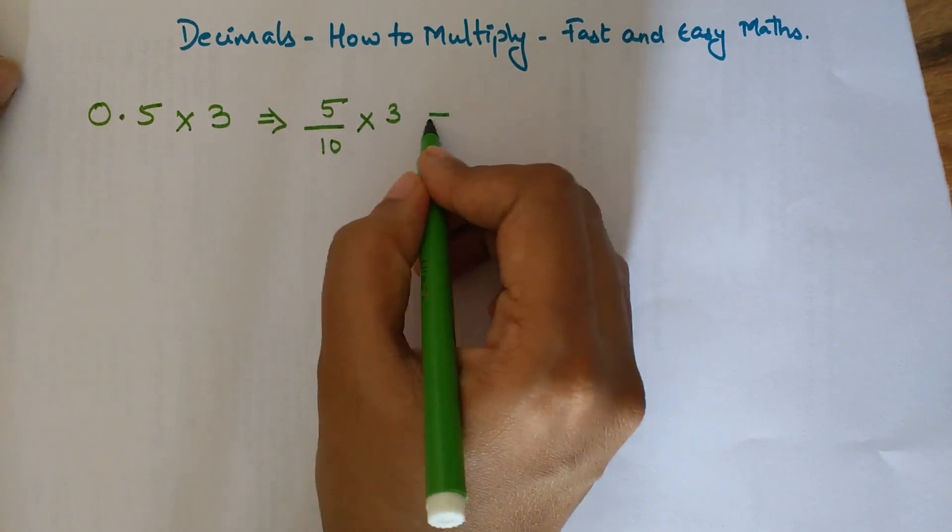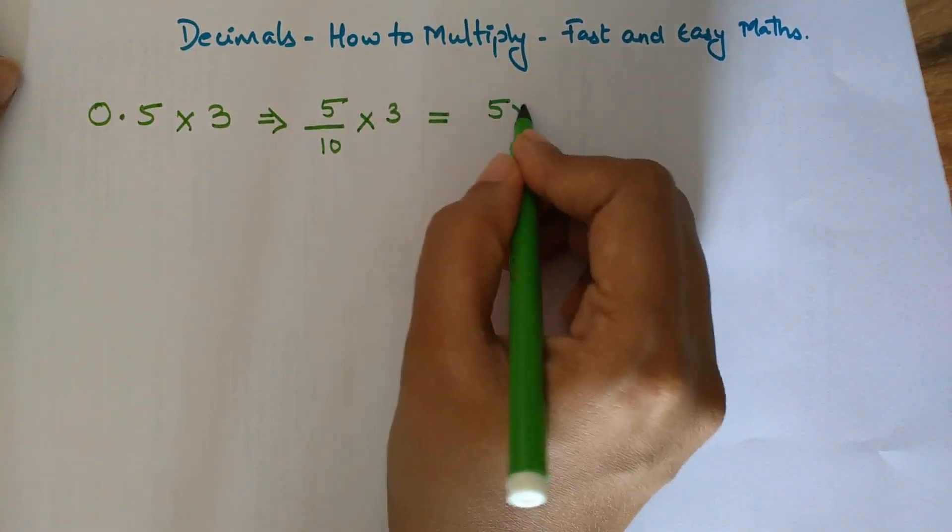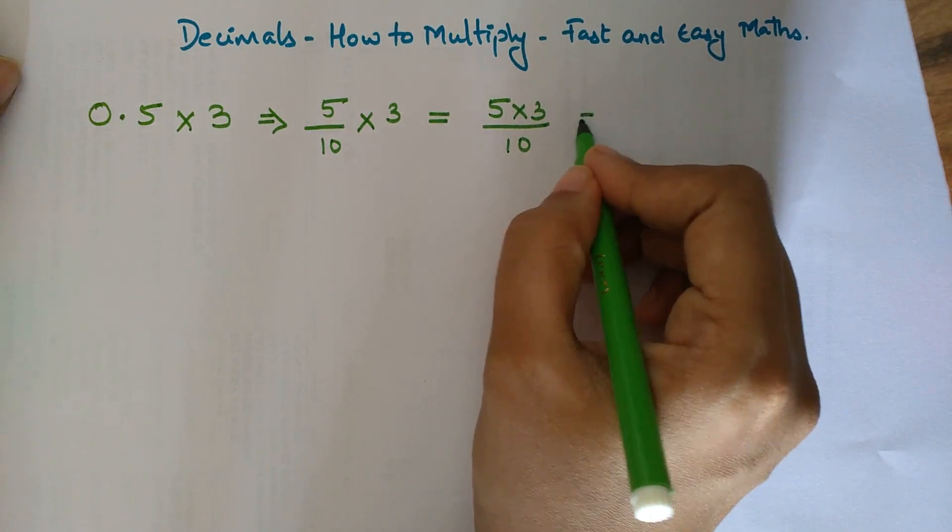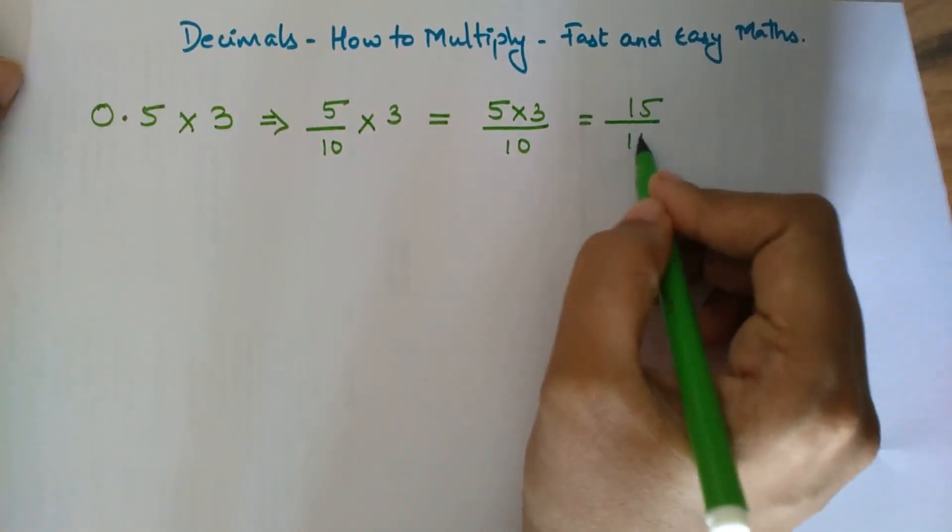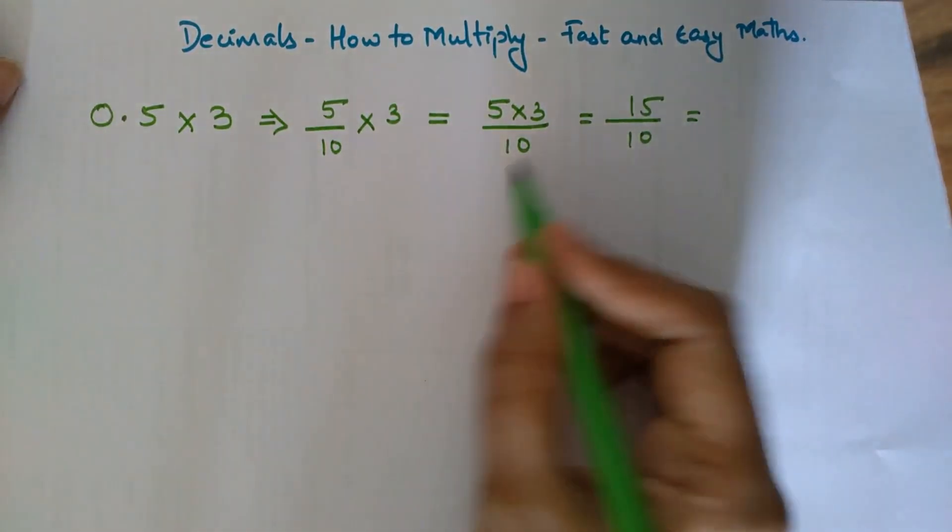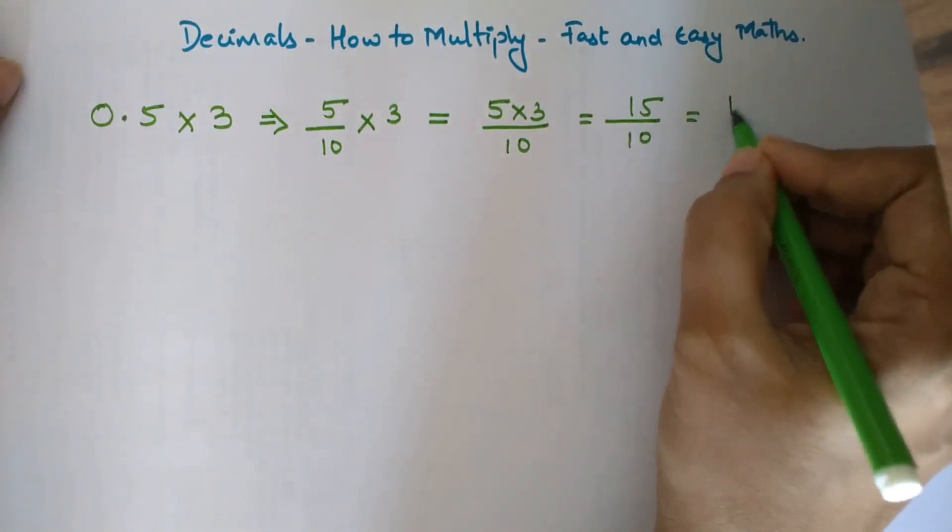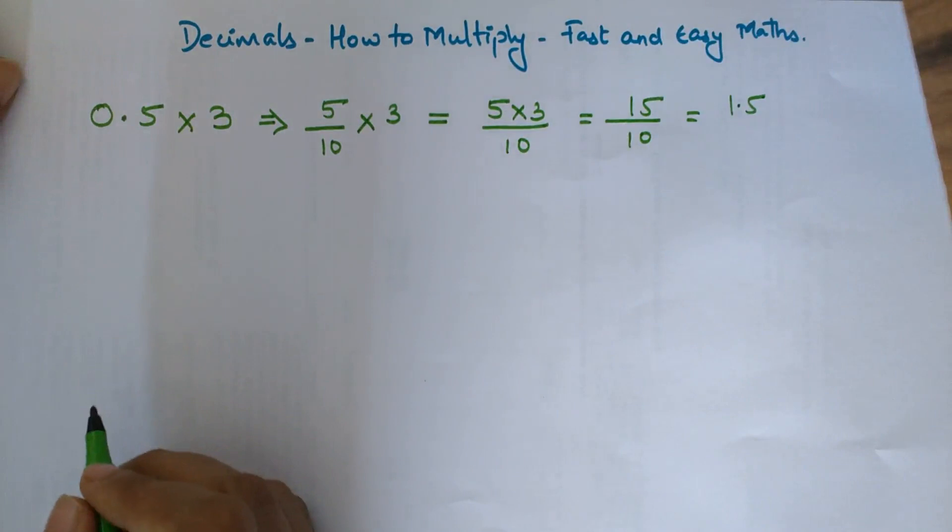We can say it is nothing but 5 into 3 upon 10. So that gets you 5 into 3, which is 15 upon 10, which when written in decimal form will be 1.5.